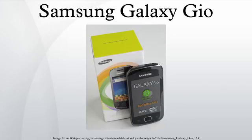The Galaxy Gio made its Canadian debut in August 2011, initially available to Bell Canada. The Gio was soon made available at Virgin Mobile Canada and Solo Mobile. Starting in December 2011, the Galaxy Gio was also made available in the United States as the Samsung Rep on U.S. Cellular.